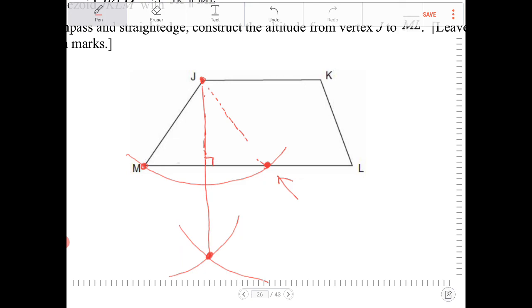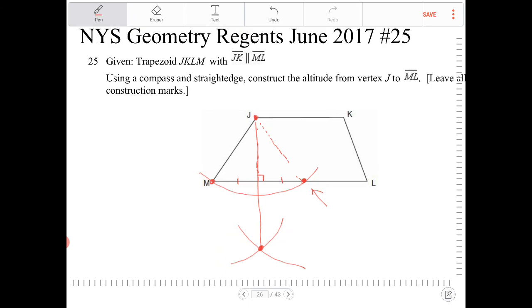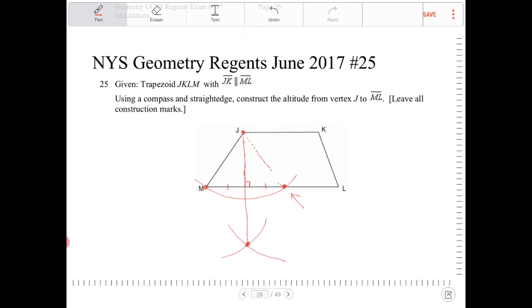This line will bisect that line segment that we formed, and will also be perpendicular to it.